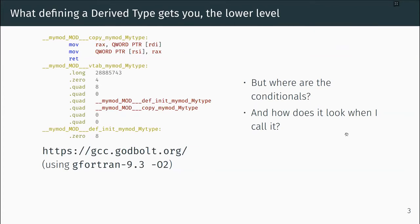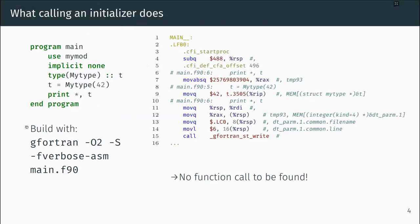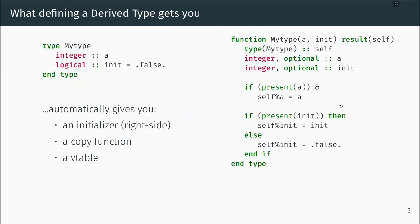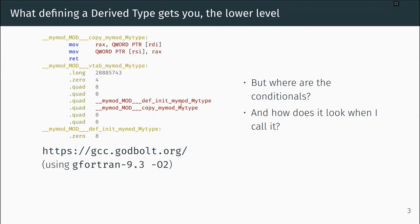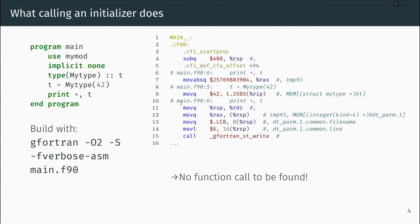If you go to Godbolt with -O2 and insert the code, this is what you see. There is the copy function, which is actual code, you have the vtable which is data, plus the initializer at the bottom to initialize the data. You can see there are branches in the initializer — whether the optional argument is given or not. But you don't see those branches anywhere in the calling code.